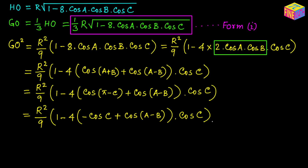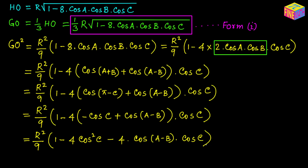Substituting, we get R squared over 9 times (1 minus 4 times (negative cosine C plus cosine(A minus B)) times cosine C). Multiplying each term inside by cosine C and removing the inner parenthesis gives R squared over 9 times (1 plus cosine squared C minus 4 times cosine(A minus B) times cosine C).